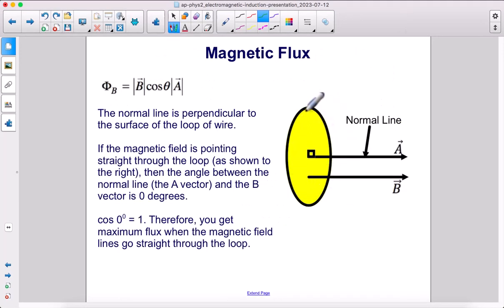Here is our loop. Now our surface is right here, the surface of the loop. We are going to draw a normal line to that surface. So the area vector is going to point out of the loop, so that that forms a 90 degree angle with the surface of the loop.